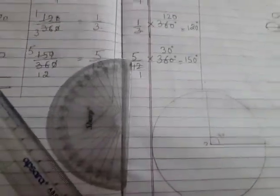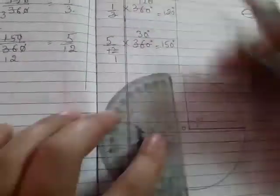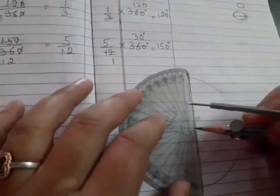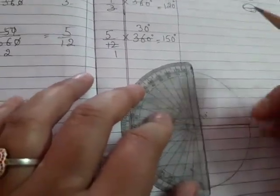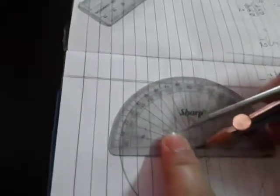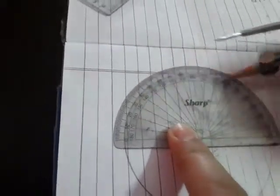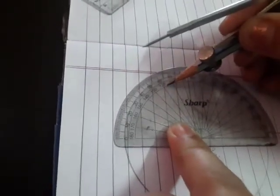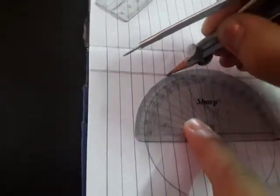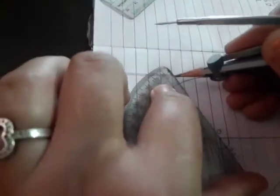Now, next angle is 120 degrees. Now we are taking this baseline. We take this baseline. We draw an angle 120 degrees. With the help of protractor, this is 120 degrees.